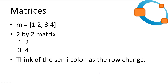We can also create matrices just as simply as we created vectors. We just combine our rows and columns to achieve a matrix. You can think of the semicolon as the end of a row, or moving down to the next row. Let's look at making some matrices and also the element-by-element operators.